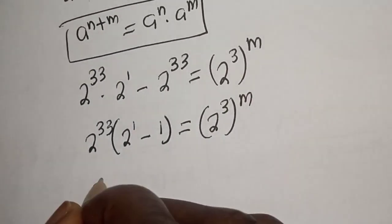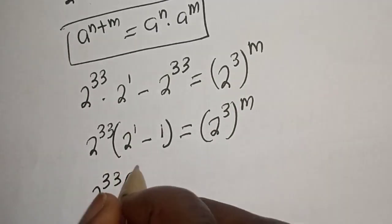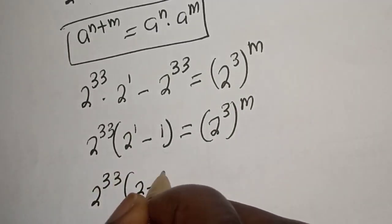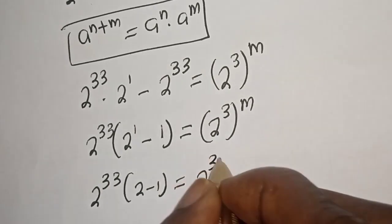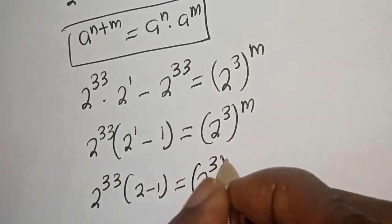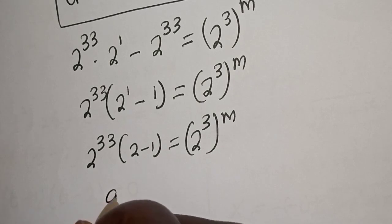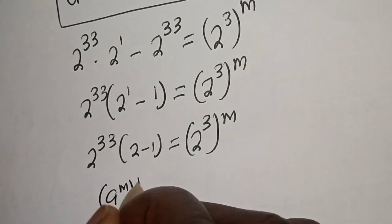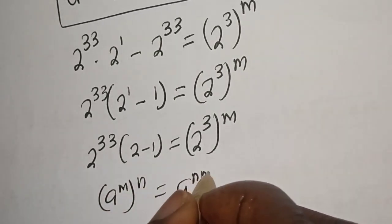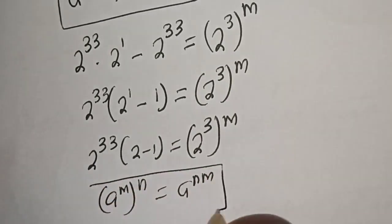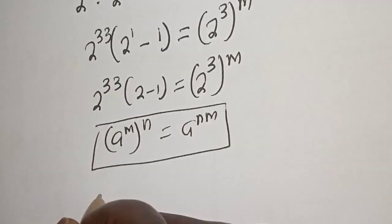Then, 2 raised to power 33 bracket: 2 raised to power 1 is 2, minus 1, equals 2 raised to power 33 to the power of m. Also note that a raised to power m, to the power of n, is equal to a raised to power n times m.